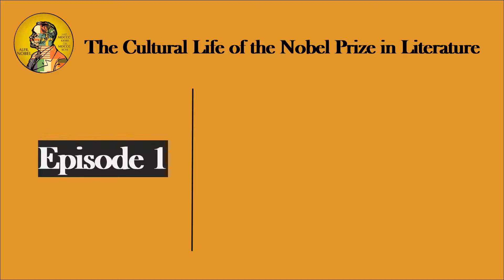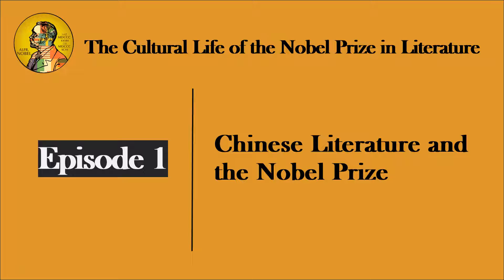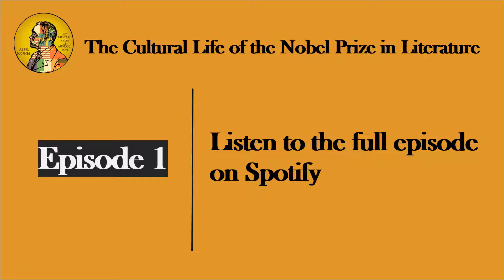Not only readers, but also critics from around the world consider Gao Xingjian and Mo Yan as almost like opposites. Do you think this is a purely stylistic issue? And to follow up on this, if it's not purely stylistic, then what are the other factors involved in terms of how we read and receive a Chinese-language Nobel laureate?